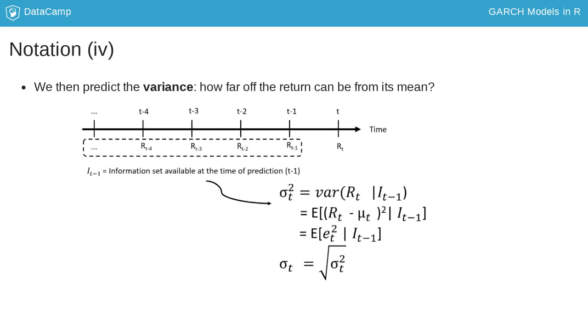Based on the information at time t-1 you can also predict the variance. The predicted variance equals the expected squared deviation of the return from the mean. Its square root is the volatility.